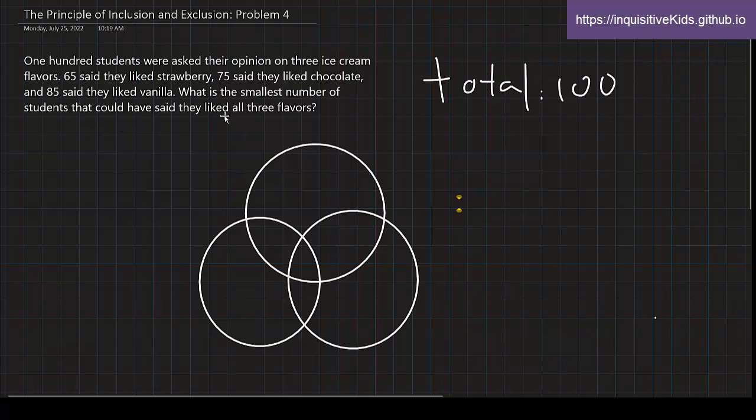What is the smallest number of students that could have said that they liked all three flavors? Well, the students that said they liked all three flavors would be in this shaded area right here. So this is strawberry, chocolate, and vanilla. Strawberry would be 65, chocolate would be 75, and vanilla would be 85.